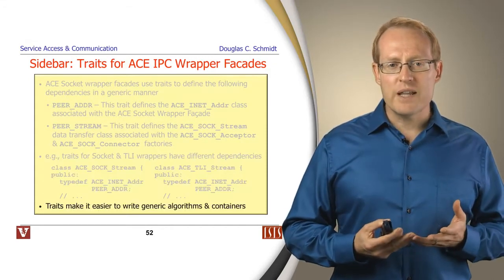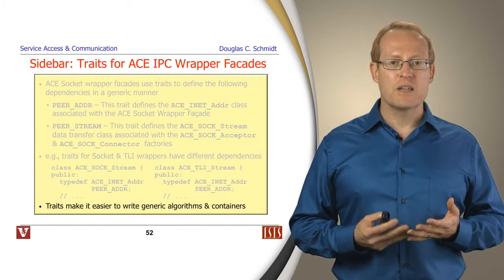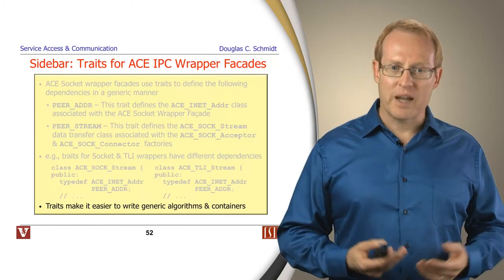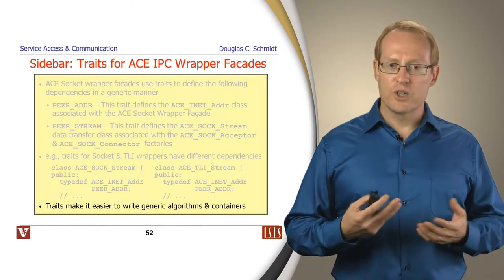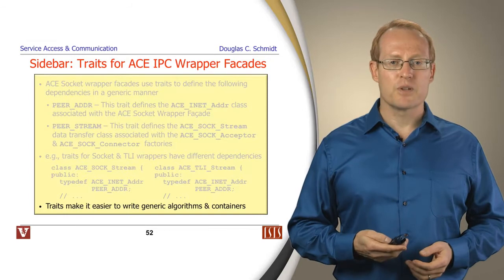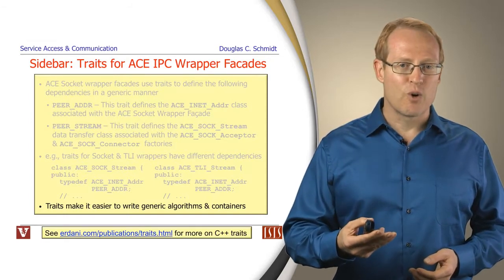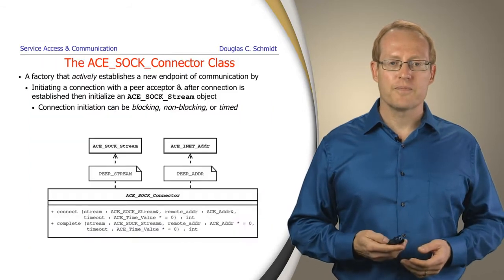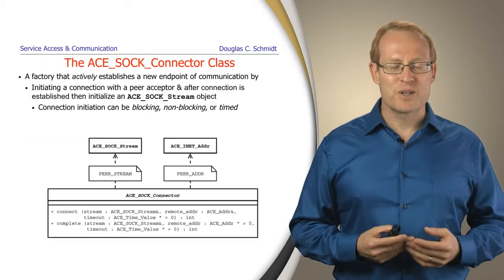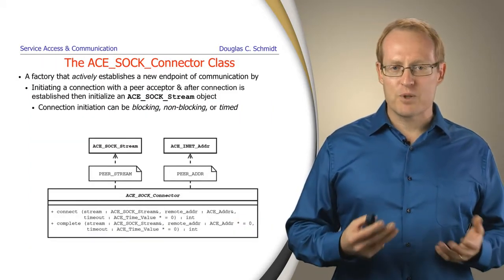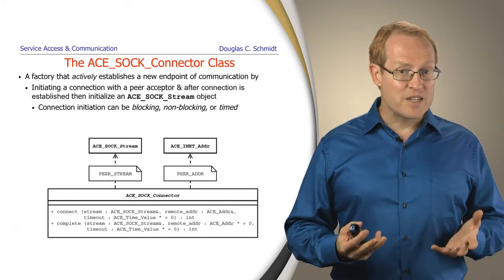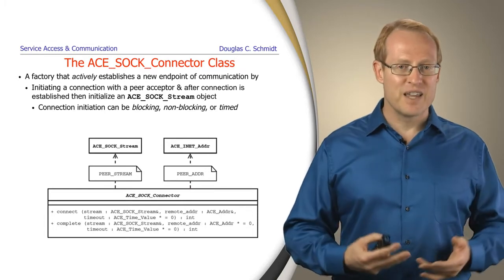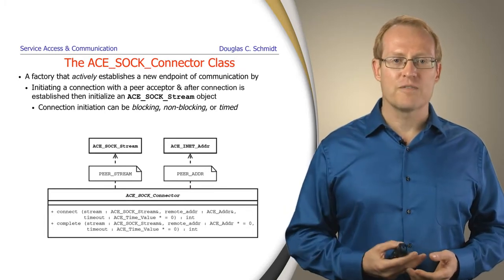The use of traits makes it easy to write generic algorithms. It makes it easier to write generic containers. And therefore, it's a powerful mechanism that you'll find used throughout the generic programming paradigm in C++. If you take a look at this URL, you'll find out more information about traits and trait classes. So, now going back onto our discussion about the ACE abstractions. We have a SOCK_Stream that's used for communication once things are connected, but we first have to connect things in order to be able to get the communication to flow.